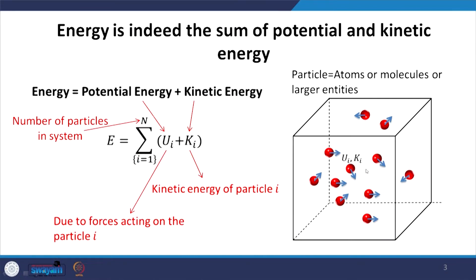If I look at a particle i, that particle may have a potential energy u_i by virtue of the forces acting on it, and it can have a kinetic energy k_i by virtue of the motion of that particular particle. The energy of the system would then be the sum of the potential and kinetic energy for all the particles in the system — summing from i equal to 1 to N, where N is the number of particles, over all potential and kinetic energies.